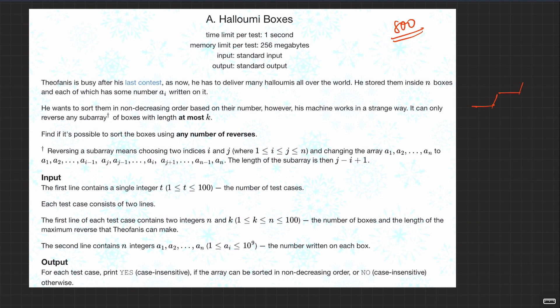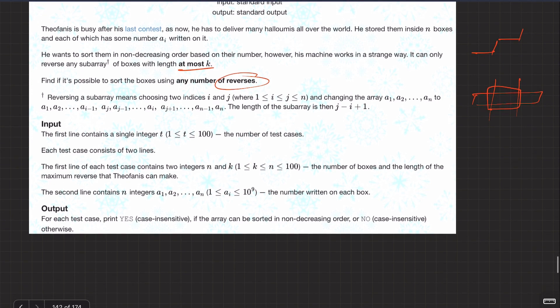However, the machine works in a strange way — it can only reverse a sub-array of boxes of length at most k. Find if it's possible to sort the boxes using any number of reverses. Reversing a sub-array means you just pick one sub-array out of it and then just reverse it.